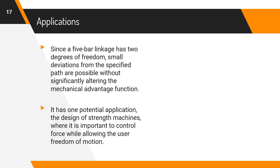Since a 5-bar linkage has 2 degrees of freedom, small deviations from the specified path are possible without significantly altering the mechanical advantage function. It has one potential application, the design of strength machines, where it is important to control force while allowing the user freedom of motion.